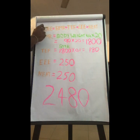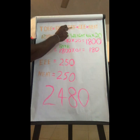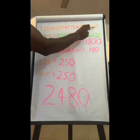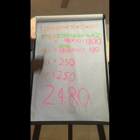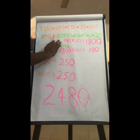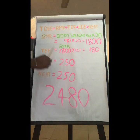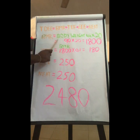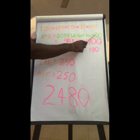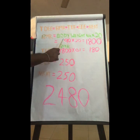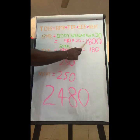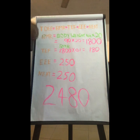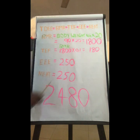TDEE equals BMR plus TEF plus EE plus NEAT. For BMR, I've taken the simplest formula: body weight in kilos multiplied by 20. So I've taken my body weight, which is 90 kilos. 90 into 20 equals 1800 calories. So for my body organs to function well during the day, I need 1800 calories.